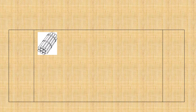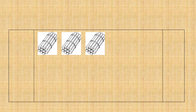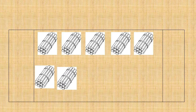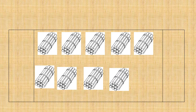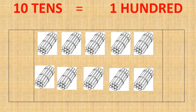Let's count the bundle of tens. One ten, two tens, three tens, four tens, five tens, six tens, seven tens, eight tens, nine tens, ten tens. So we have ten bundles of tens. Ten tens is equal to number one hundred.